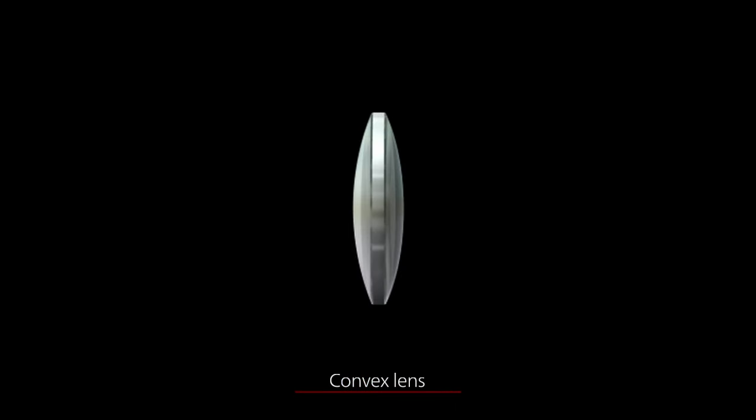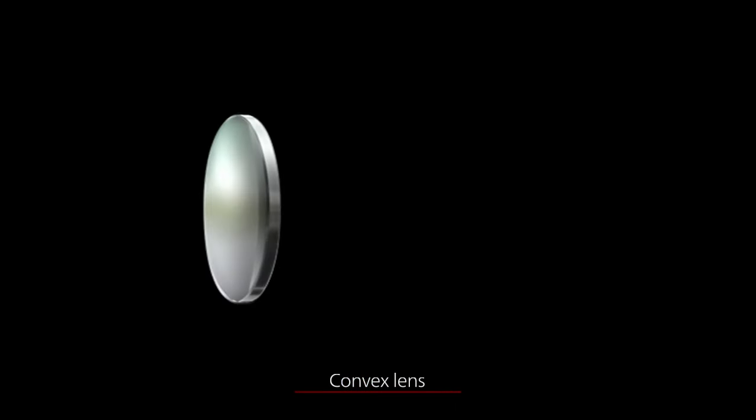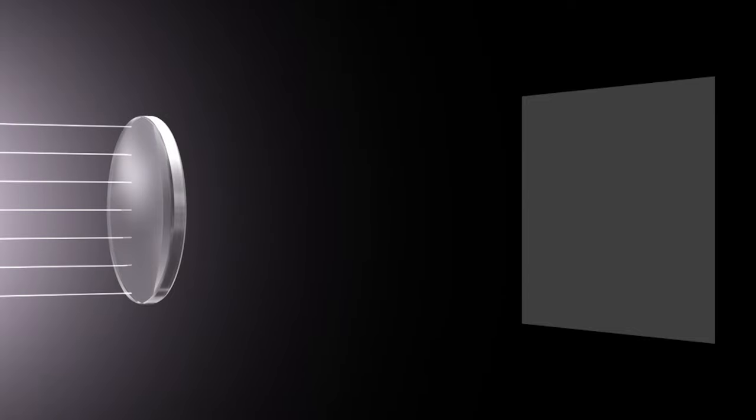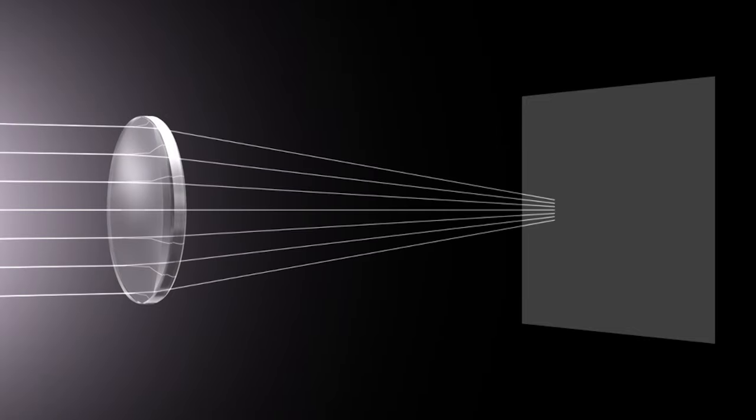Lenses that are thicker at the middle are called convex lenses. These lenses cause parallel light rays to converge to a single point called the focal point.